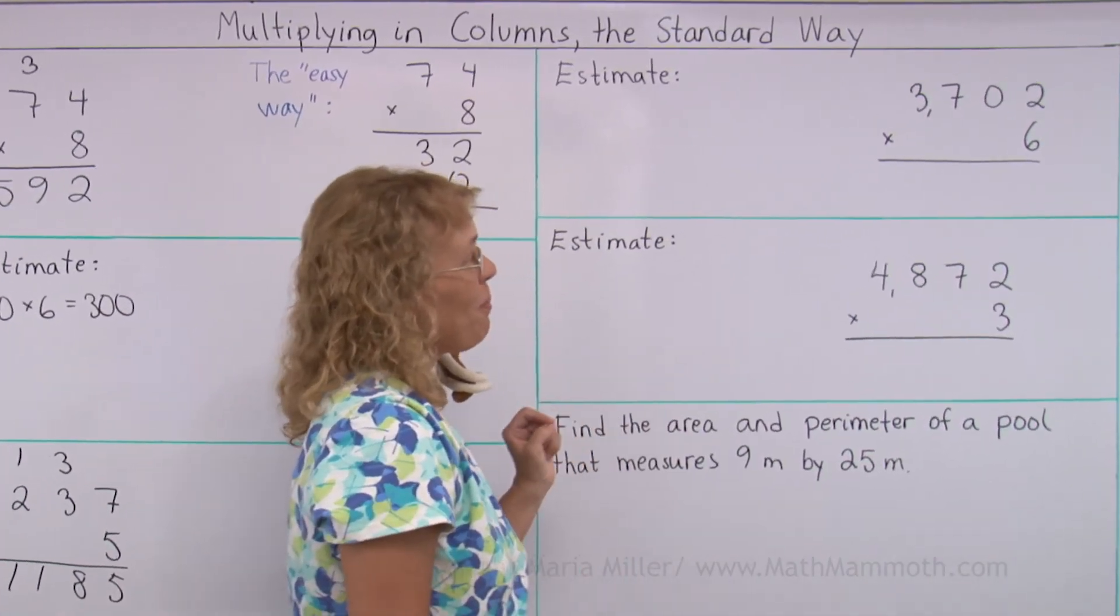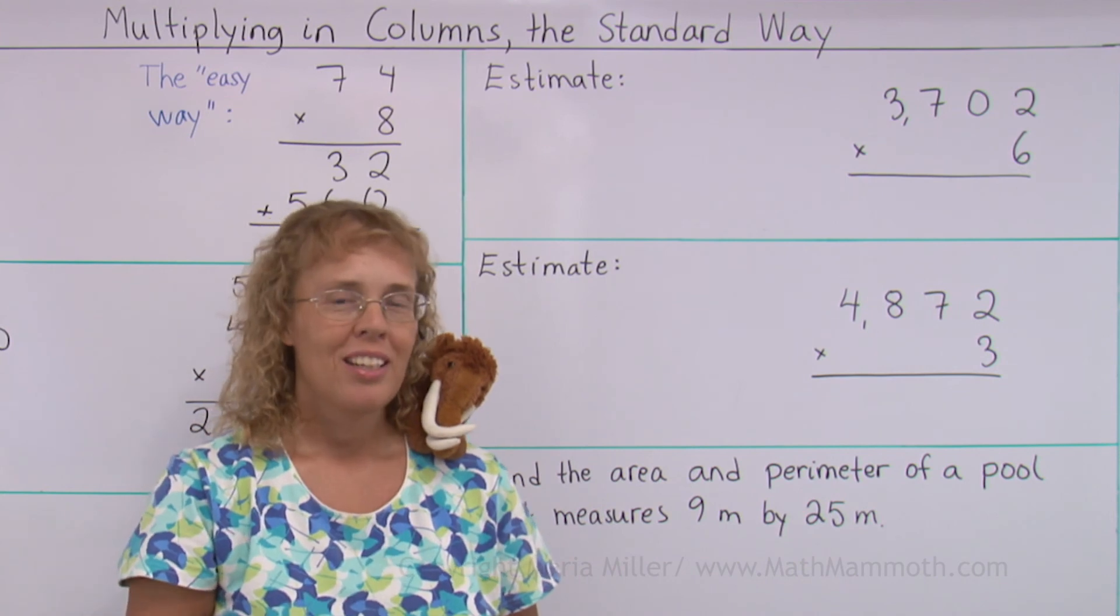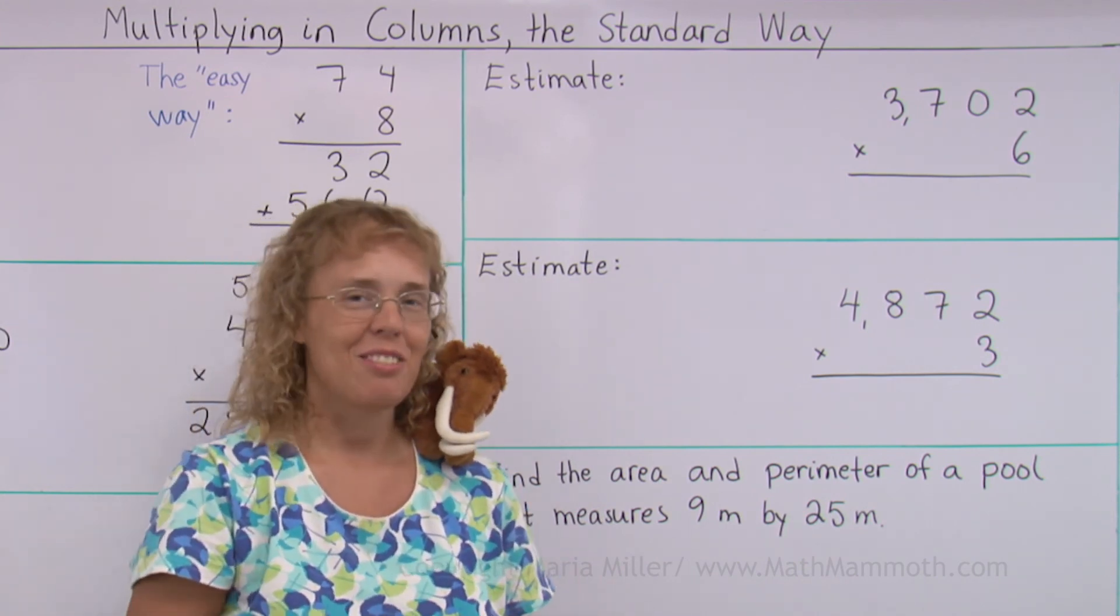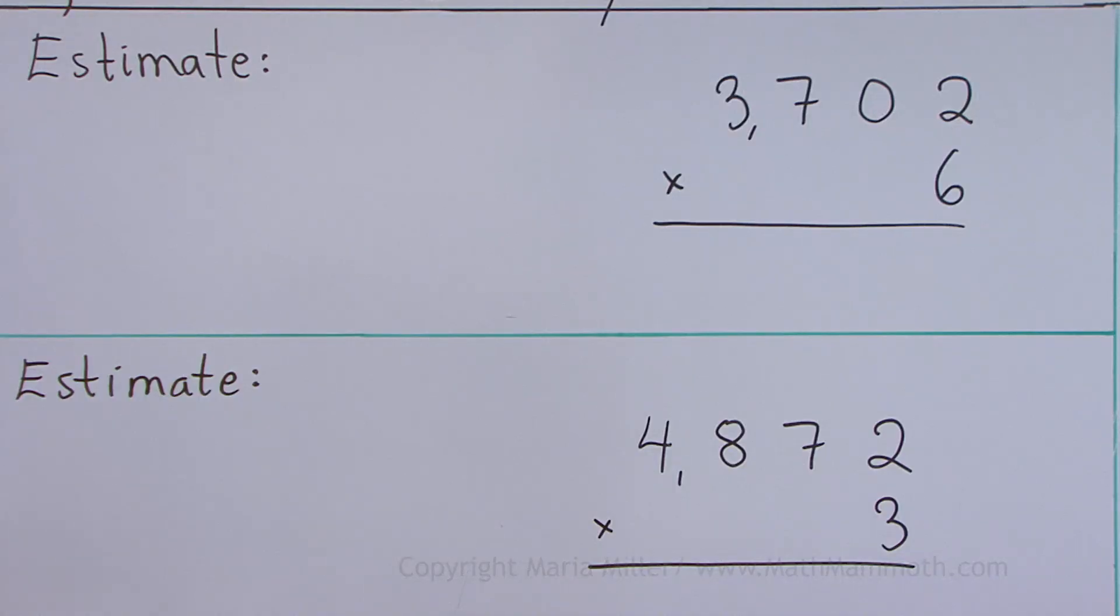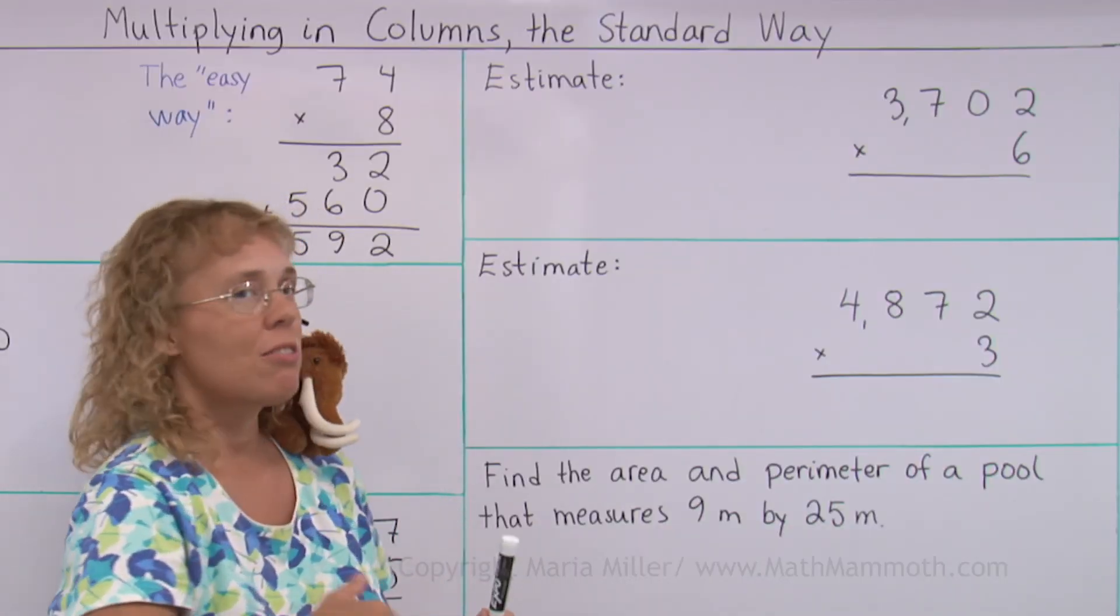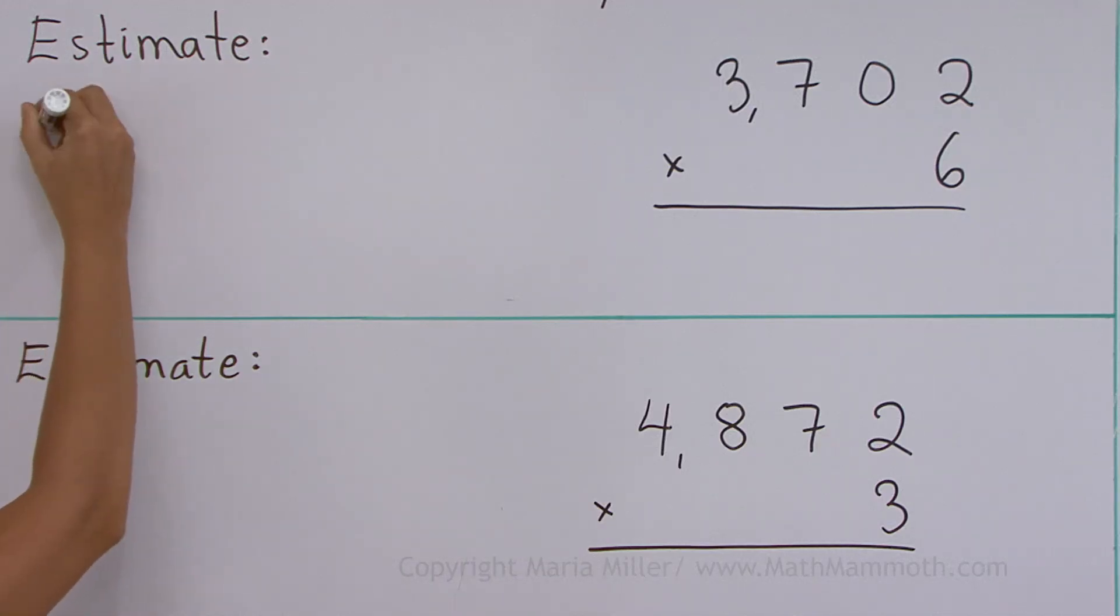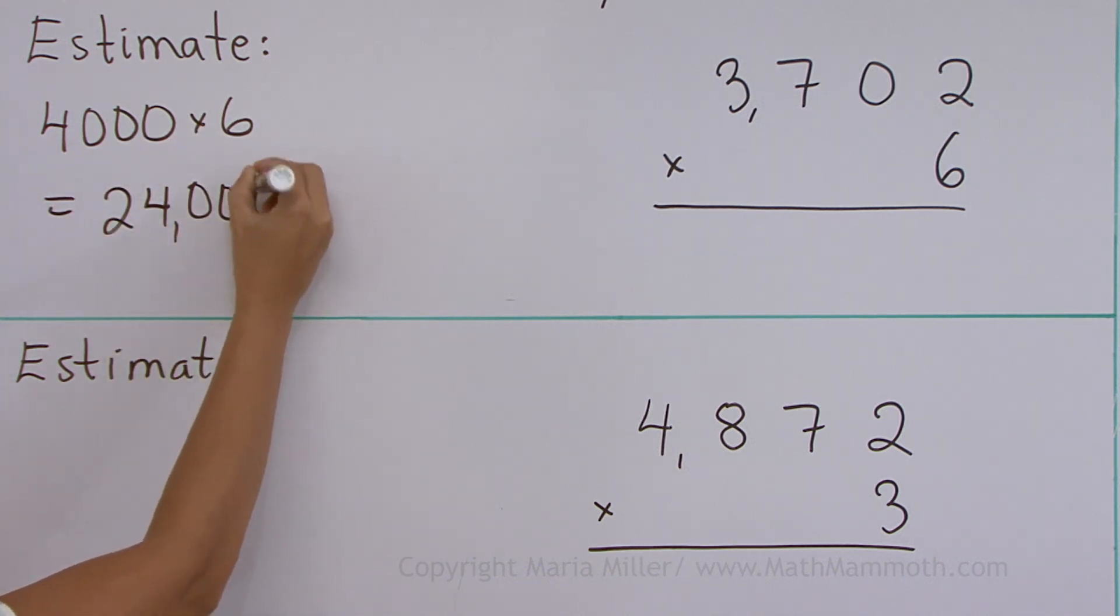Next one. We have four digits. The idea is the same. We will multiply and then regroup, and then multiply and add, regroup. Just repeat that. First let's estimate. 3,702 times 6. The easiest way to estimate this is probably if I just round that number to the nearest thousand. So I would round it to 4,000 times 6, and my estimate would be 24,000.